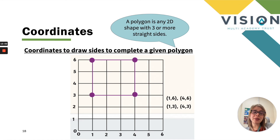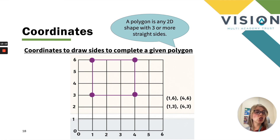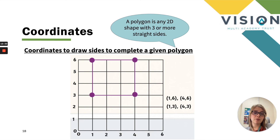Continuing to look at coordinates, we now need to be able to draw sides to complete a given polygon. A polygon is simply a 2D shape with three or more straight sides — triangle, square, rectangle, pentagon, hexagon are all polygons. We look at the four coordinate points given, place the marks on the graph, then join them together. Sometimes three out of four points are given and children must use their mathematical knowledge to find the missing coordinate point.